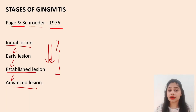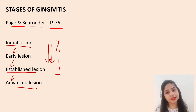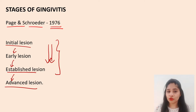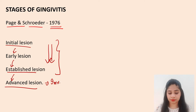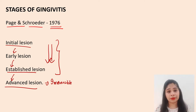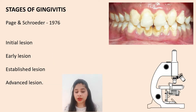One important aspect to understand is that the first three stages are reversible. If the patient maintains oral hygiene and plaque and calculus are removed, disease progression is arrested and the gingiva returns to health. However, in the case of the advanced lesion, this is an irreversible condition — the state of health cannot be brought back to absolutely normal conditions.